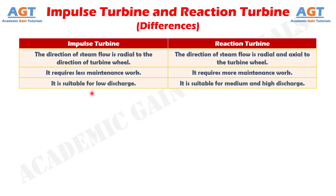Number 10: Impulse turbine is suitable where discharge is low. Whereas, a reaction turbine is suitable for medium and high discharge.